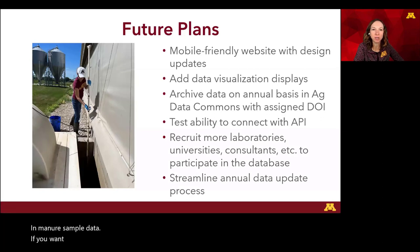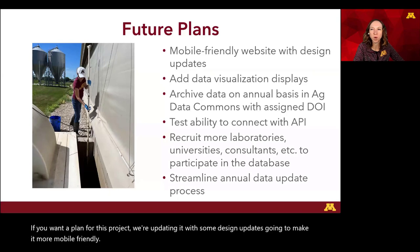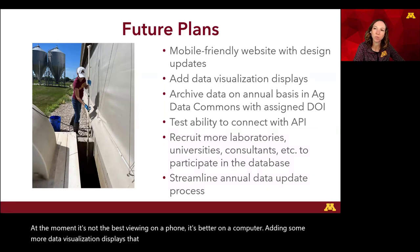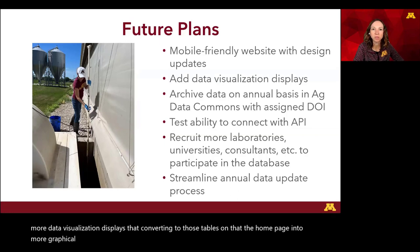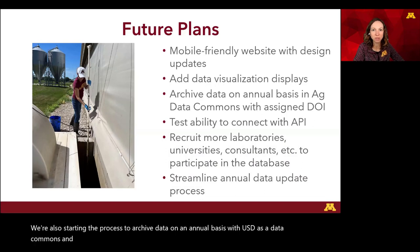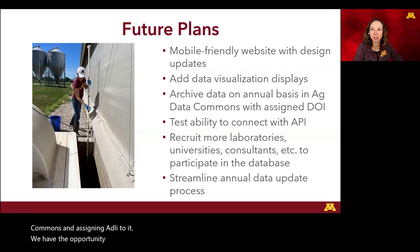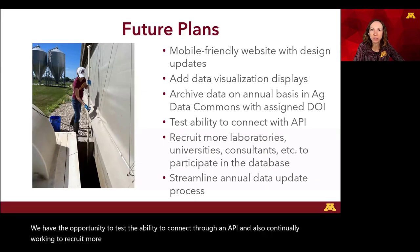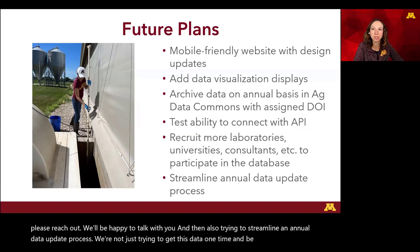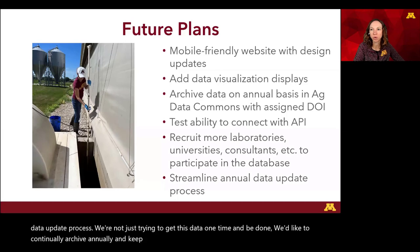A few more plans for this project: we're doing design updates to make the site more mobile friendly — at the moment it's better on a computer — and adding more data visualization displays, converting some tables on the homepage into graphical formats. We're also starting the process to archive data annually with USDA's Ag Data Commons and assign a DOI. We have the opportunity to test an API connection, and we're continually working to recruit more partners to participate in the database. We're also streamlining an annual data update process — we want to continually archive annually and keep this project growing and current.